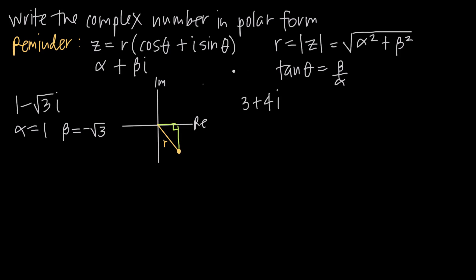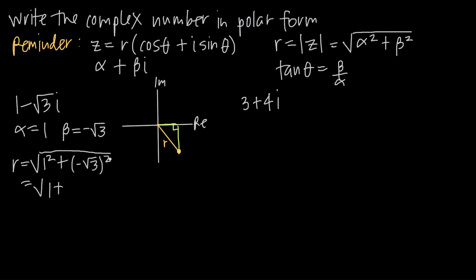Let's plug in to find r: r equals the square root of alpha squared plus beta squared, so square root of 1 squared plus negative square root of 3 squared. Simplifying, that's the square root of 1 plus 3, since negative times negative is positive and root 3 times root 3 is 3. That gives us the square root of 4, which equals 2. So r equals 2.